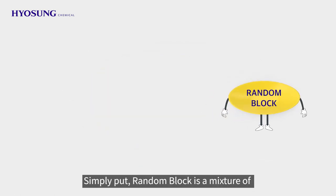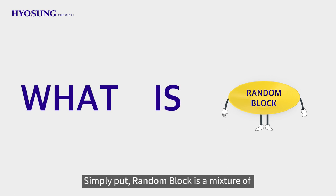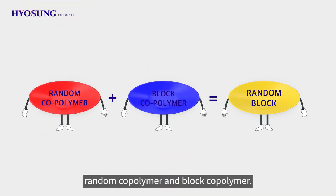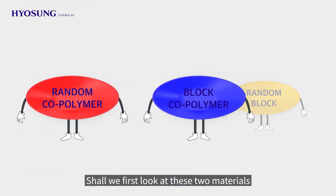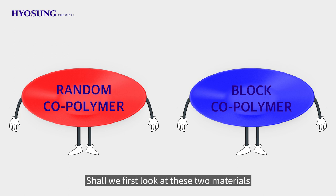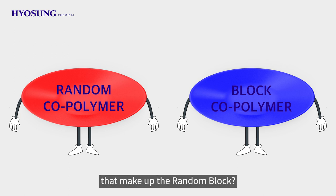Simply put, Random Block is a mixture of Random Copolymer and Block Copolymer. Let's first look at these two materials that make up the Random Block.